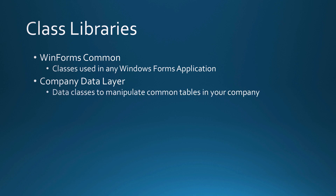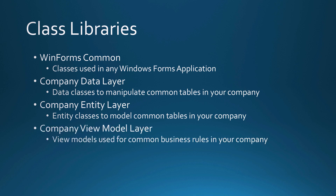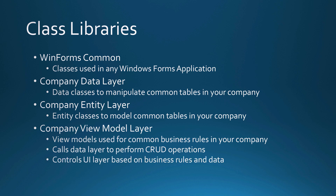The company data layer contains data classes used to manipulate the common tables used from multiple applications within your company. The entity layer holds entity classes to model those common tables. The view model layer contains view models used for common business rules within your company — it calls the data layer to perform CRUD operations and controls the UI layer based on business rules and data.